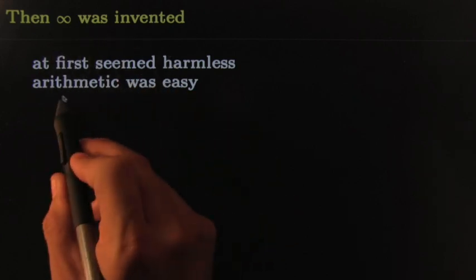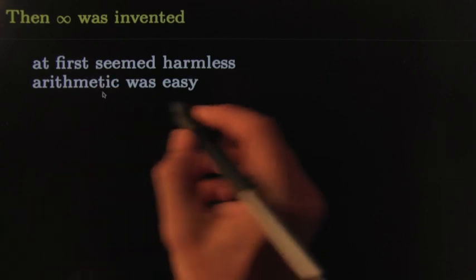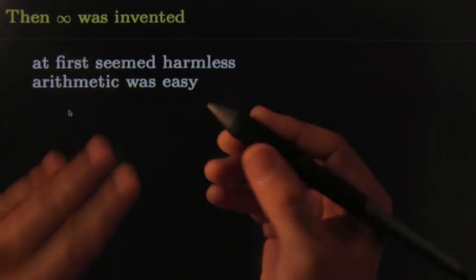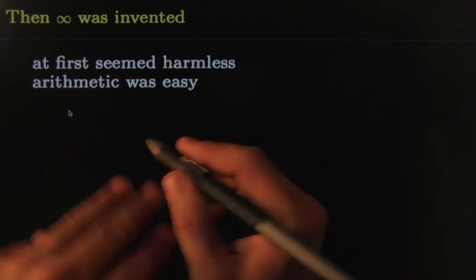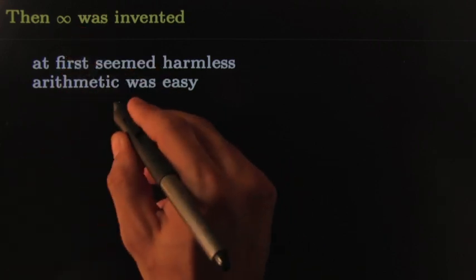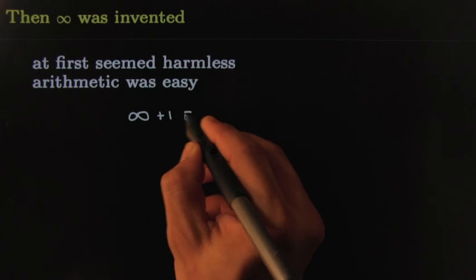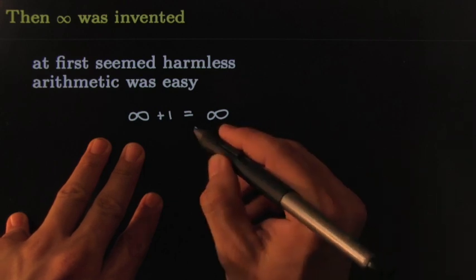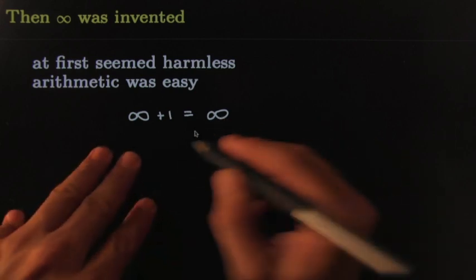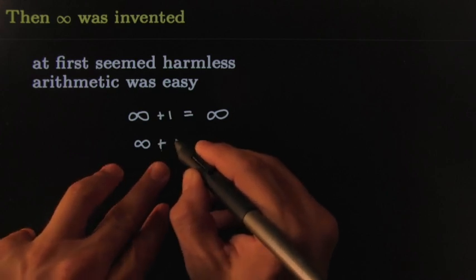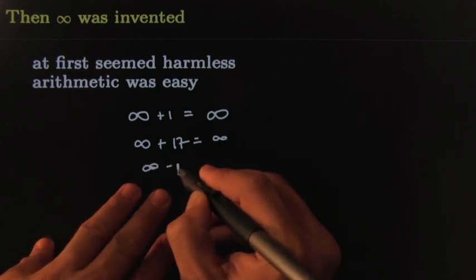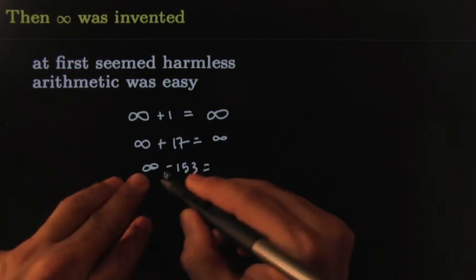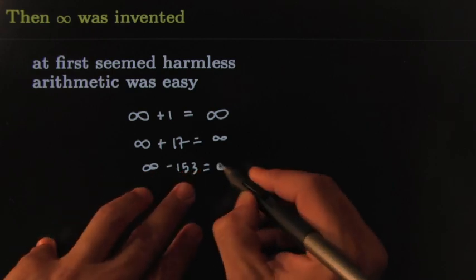Even infinity — at first you might think it's harmless, just a big number. If you think about infinity as a huge number larger than any real number, you can do some arithmetic with it. Take a super huge number and add one — you probably get a super huge number again. Infinity plus one is still infinity. Infinity plus 17? Still infinity. Infinity minus 153? Well, you haven't really taken that much away from a super huge number — it can absorb that and still be super huge.